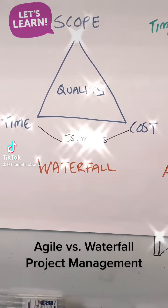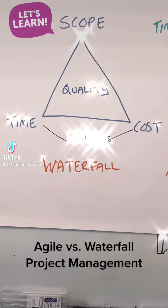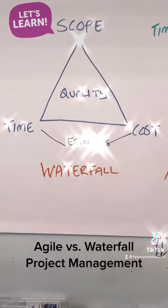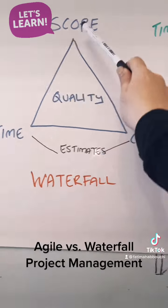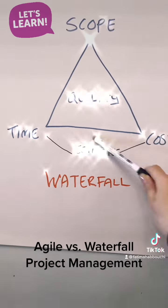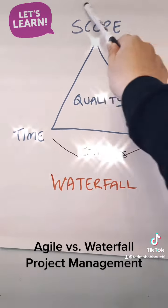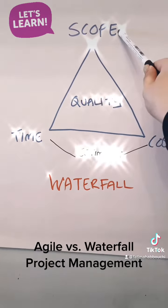What is the difference between waterfall projects and agile? Well, first of all, let's refer to the iron triangle, where you can see we have scope at the top.